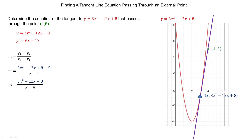No matter where that point is on the curve, the slope between the external point and the curve point should equal the derivative, because the derivative gives the slope of the tangent line at any point on the curve. So we can equate this general slope calculation to the derivative to find exactly what the x value is, and then we'll get the equation of the tangent line.